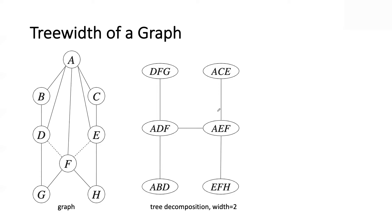I'm going to put two conditions on you when you construct this tree decomposition. The first condition: for every edge, like A-C, I want variables A and C — the endpoints of that edge — to appear together in one of these bubbles, which are usually called clusters. The second condition: if a variable like F appears in two of these bubbles, it must appear in every bubble on the path between them. So F appears here and there, meaning it must appear on every cluster between those two.